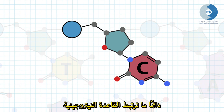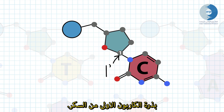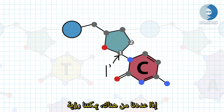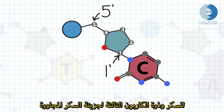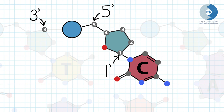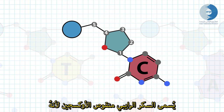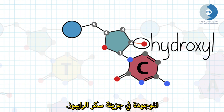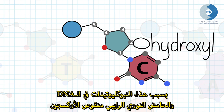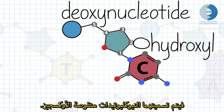The nitrogenous base is always attached at the one prime carbon of the sugar. If we count from there, we can see that there is a phosphate between the five prime carbon of one sugar and the three prime carbon of the neighboring sugar. The sugar is called deoxyribose because it is missing a hydroxyl group at the two prime carbon, which is present in ribose. Because of this, nucleotides in DNA, deoxyribonucleic acid, are called deoxynucleotides.